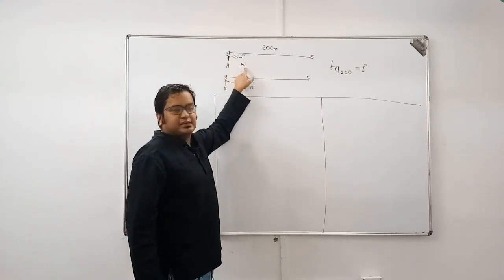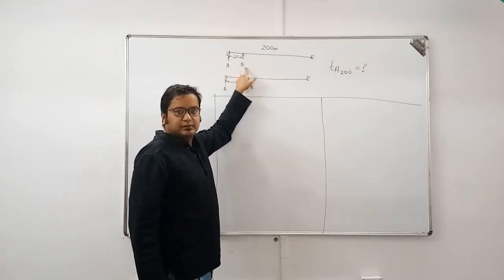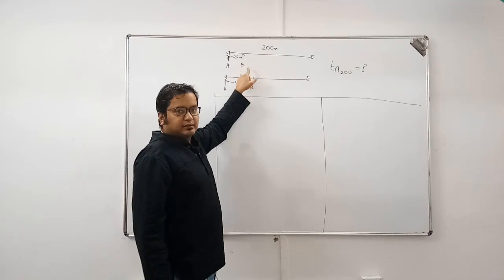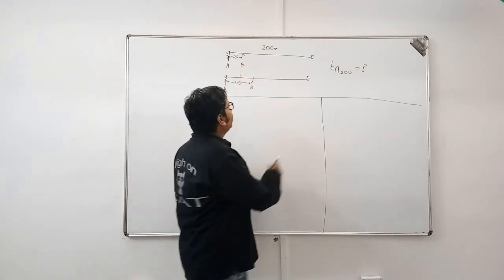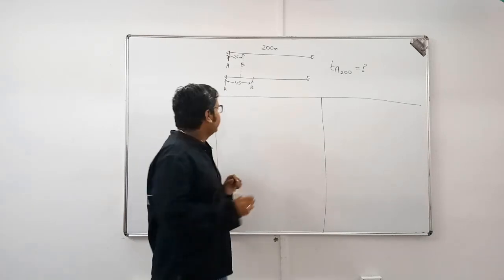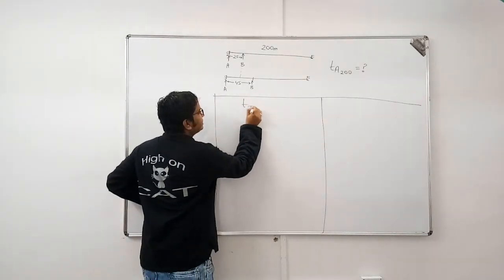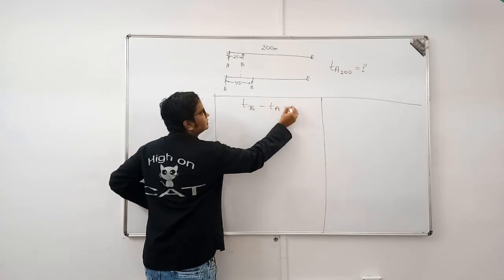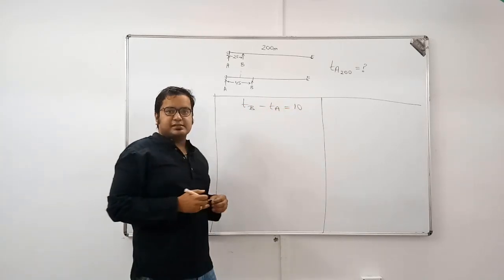B starts 25 meters ahead of A. It is also given that in such a case, A wins the race by 10 seconds. Now what does that mean? That means, time taken by B minus time taken by A is equal to 10.